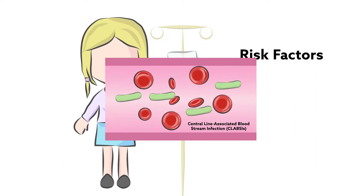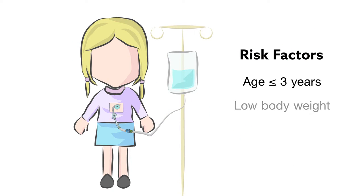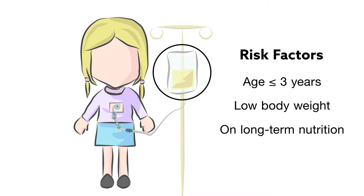At highest risk are children age 3 or younger, those with low body weight, and kids or infants on long-term nutrition. The sugars, fats, and proteins flowing through catheters create perfect conditions for the rapid expansion of microorganisms.